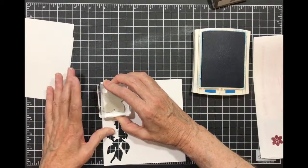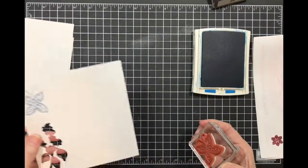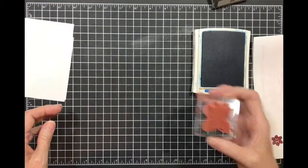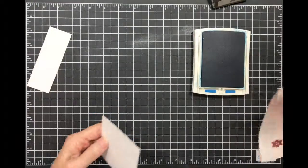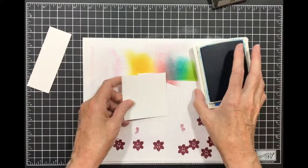First thing I want to do is I'm going to stamp my butterfly on scrap paper. I'm going to set that to let it dry a little bit.